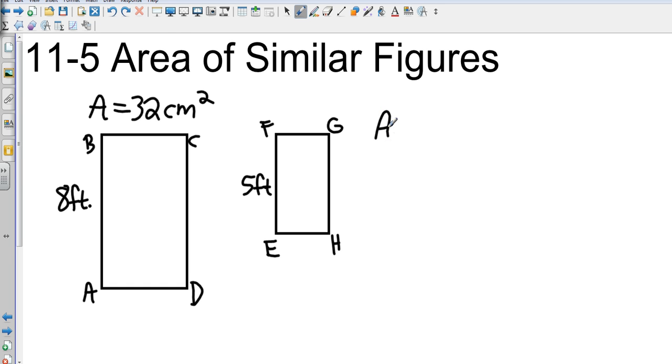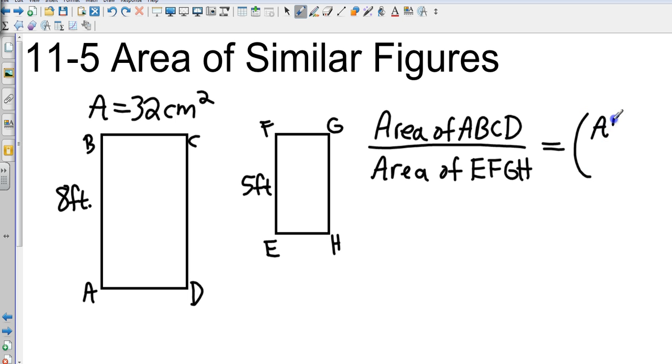You're going to find the area of ABCD over the area of EFGH. And to find our scale factor, we're going to use our given sides, which is AB and our given side of EF, and we are going to square them. That formula will allow us to find the missing area of EFGH.